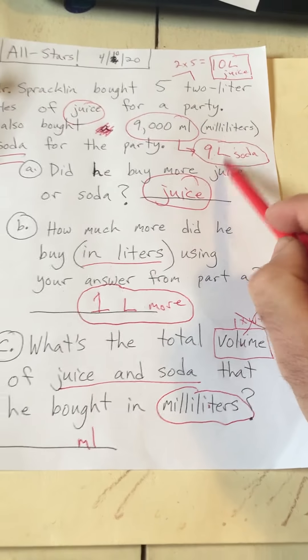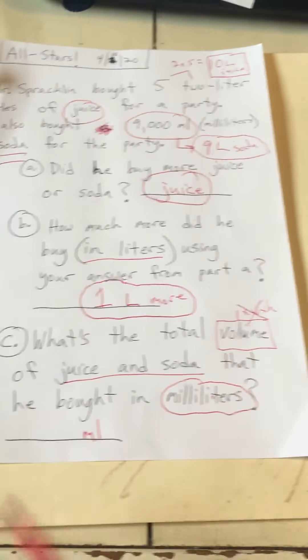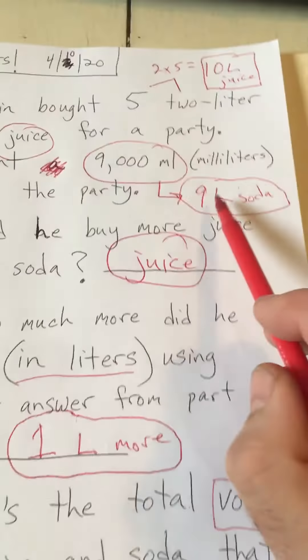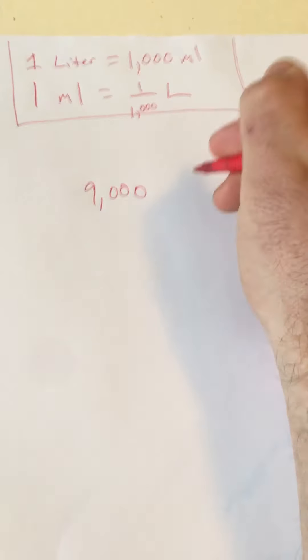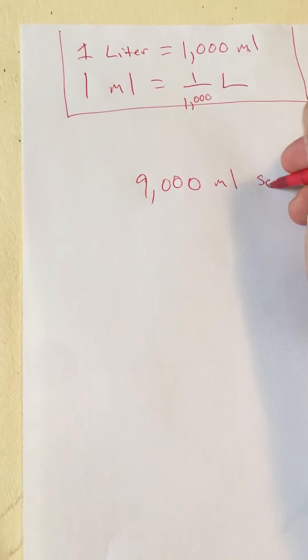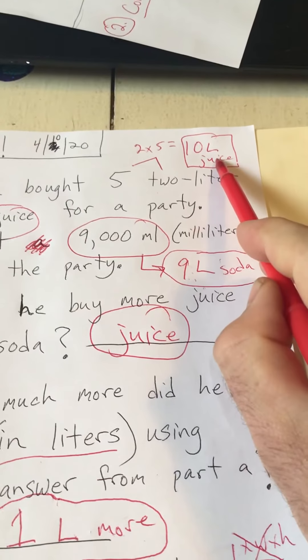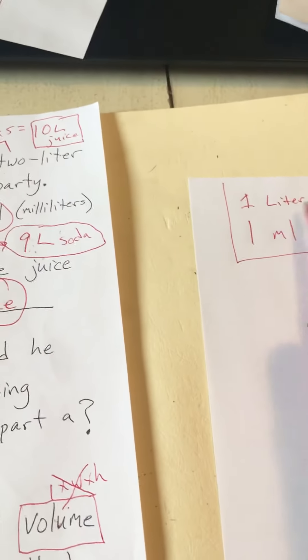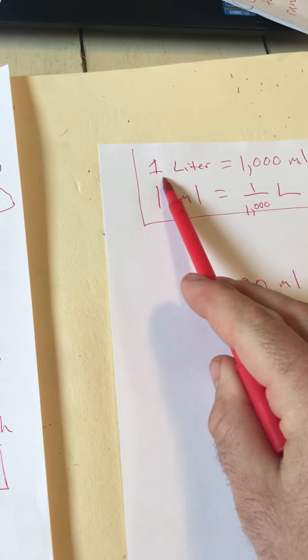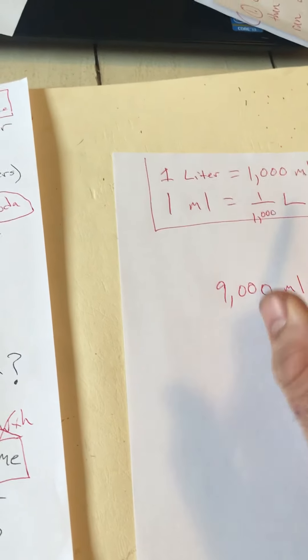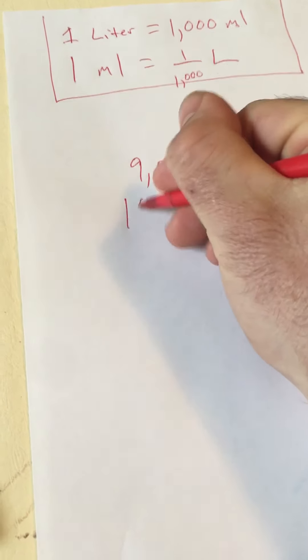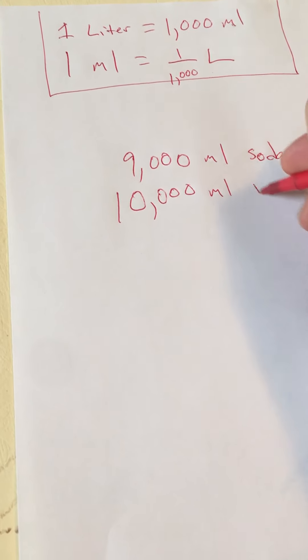We could say 19 liters total — ten plus nine is nineteen — but how many milliliters is that? Nine liters is 9,000 milliliters of soda. If one liter is a thousand milliliters, then ten liters is ten times a thousand, which is 10,000 milliliters of juice.